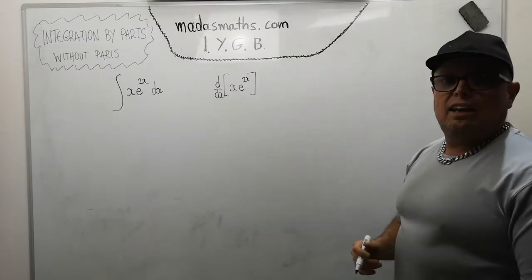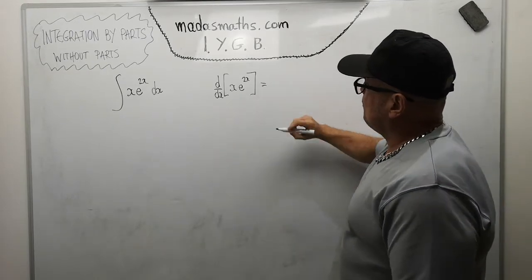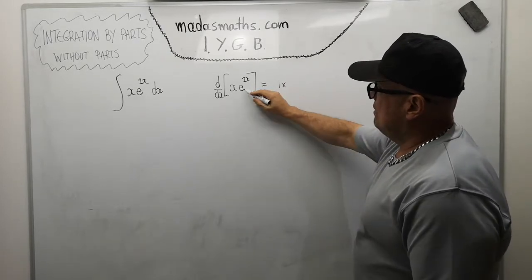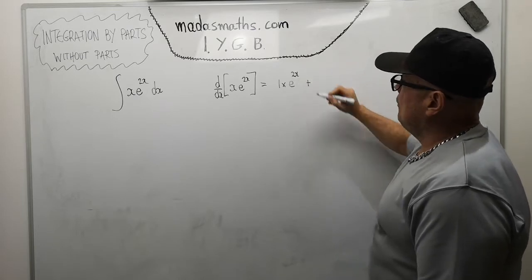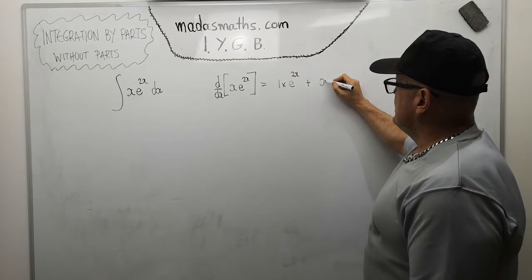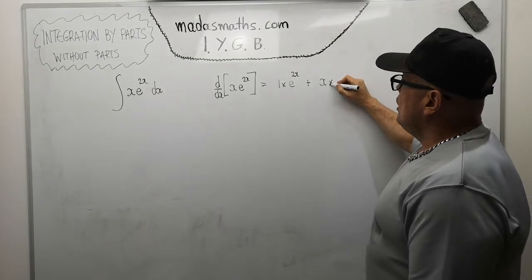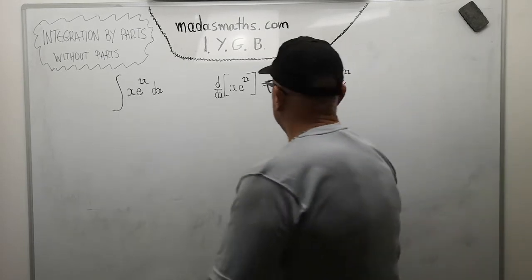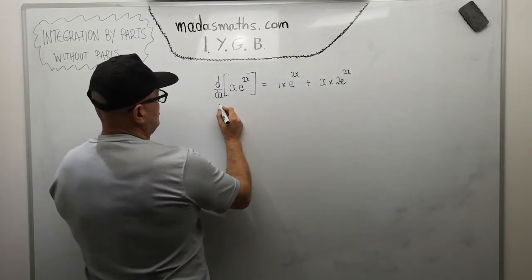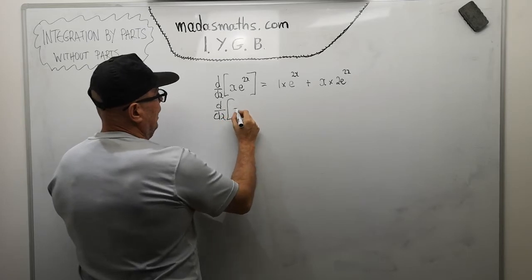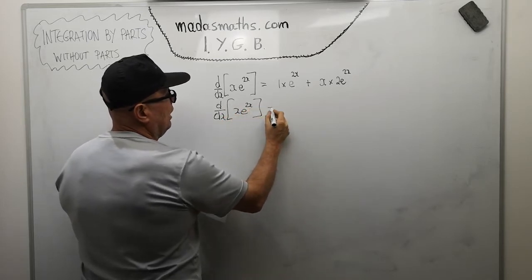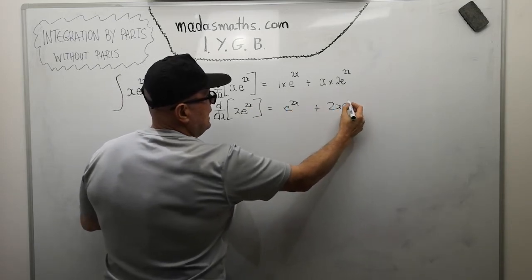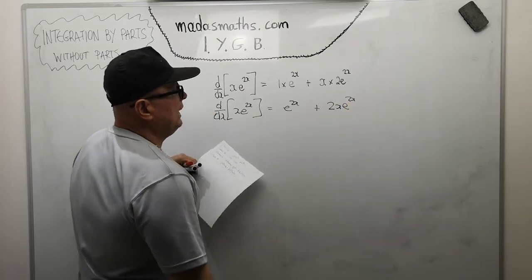My rationale was: when I do the product rule and leave the x alone and differentiate e^(2x) — the exponential doesn't change on differentiation, it just produces a factor of two — it will produce something that looks like that. If we differentiate x·e^(2x), differentiating the first bit gives 1 times e^(2x), plus x times the derivative of e^(2x), which is 2e^(2x). So the derivative of x·e^(2x) equals e^(2x) plus 2x·e^(2x).